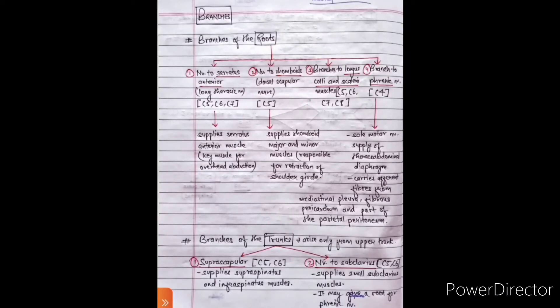Branches generally arise from roots, trunks, and cords. From the roots: first, the nerve to serratus anterior (long thoracic nerve), root value C5, C6, C7, supplying the serratus anterior muscle, the key muscle for overhead abduction. Second, nerve to rhomboids (dorsal scapular nerve), root value C5, supplying rhomboid major and minor, responsible for retraction of the shoulder girdle. Third, branches to longus colli and scaleni muscles, root value C5, C6, C7, and C8.